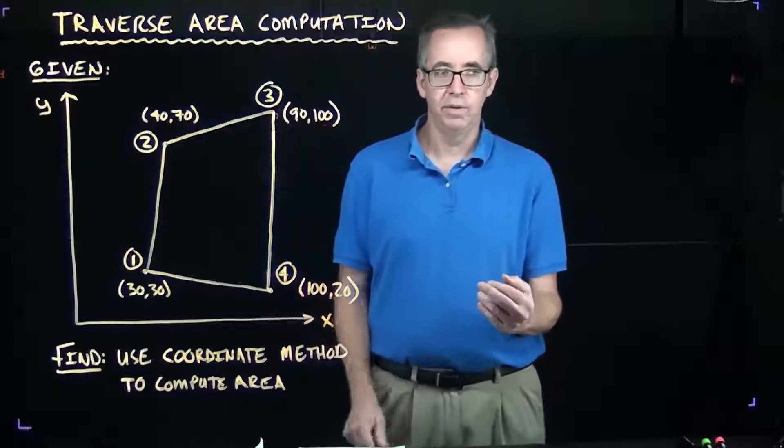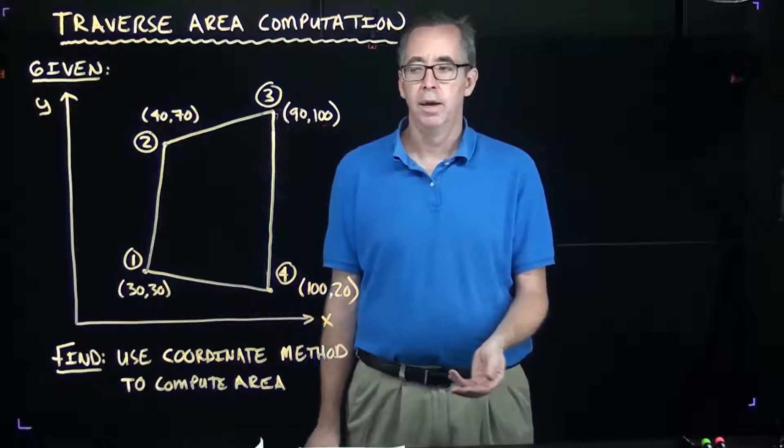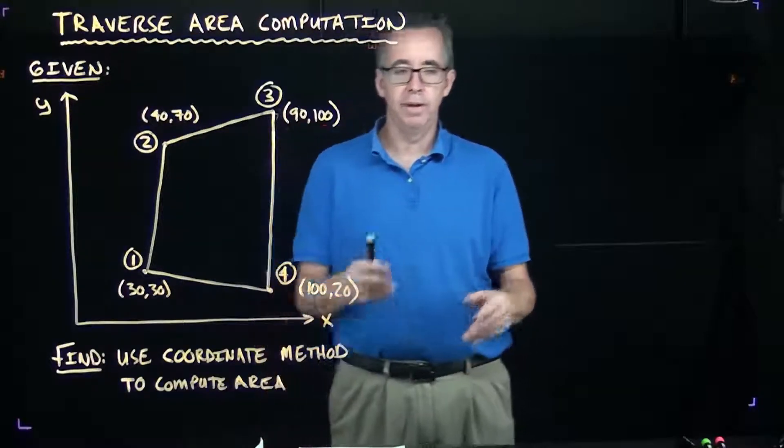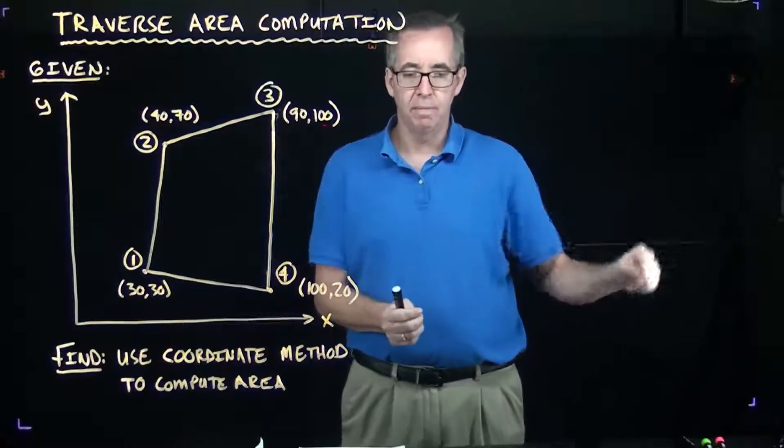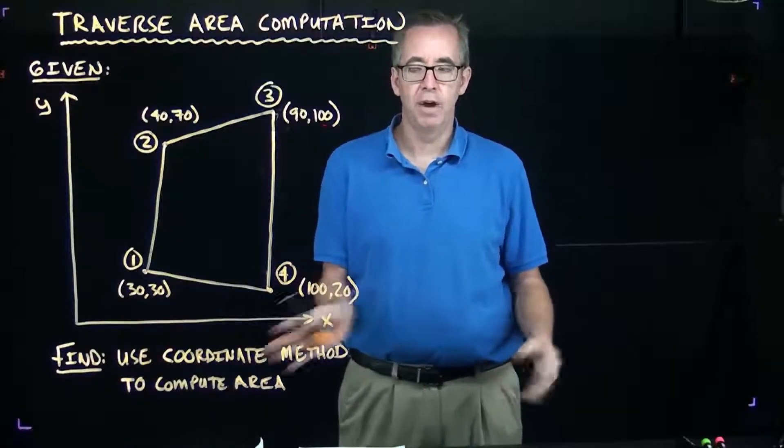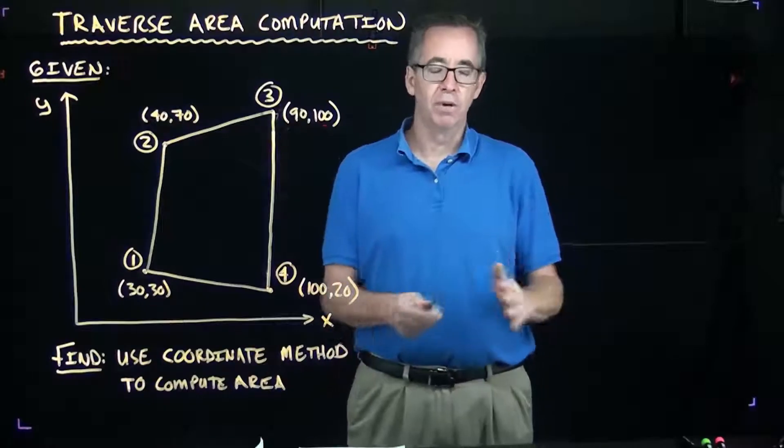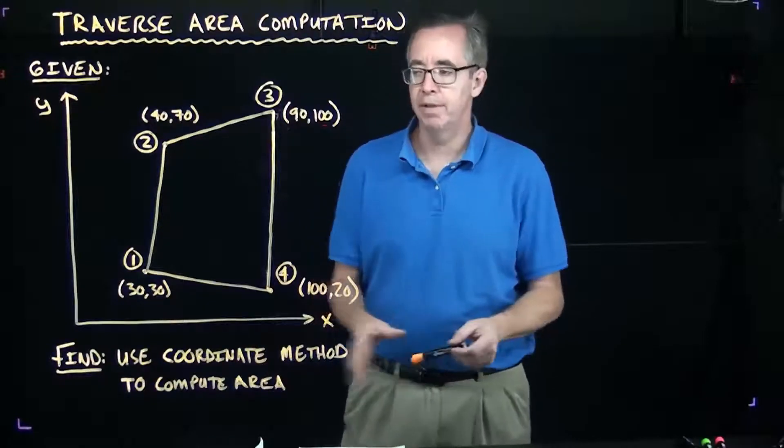North, south, east, west directions. So, if we did a survey where we surveyed the perimeter of a lot, of a traverse, and then we convert all those readings to coordinates, we would have something that looks like this.